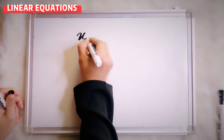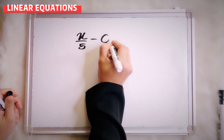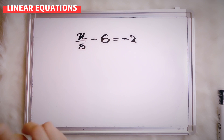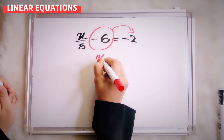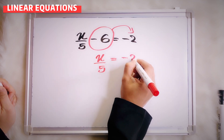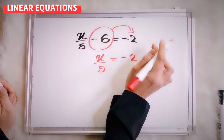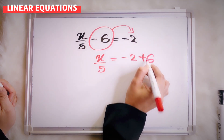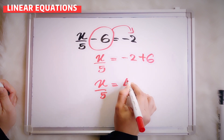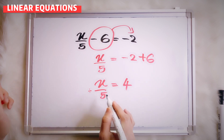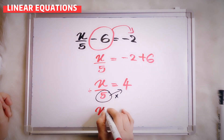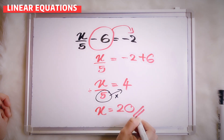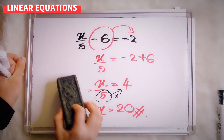Different pattern. If I give you x over 5 minus 6 equals to negative 2, first transfer negative 6 to the right side. So x over 5 equals to negative 2 plus 6, which is 4. Now, x over 5 means divide. When you transfer 5 to the other side, the opposite of divide is multiply. So x equals to 5 times 4, which is 20.